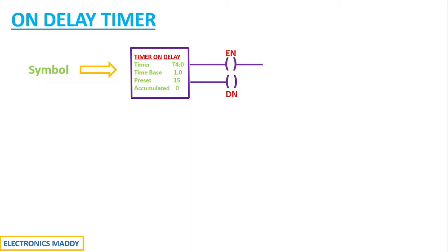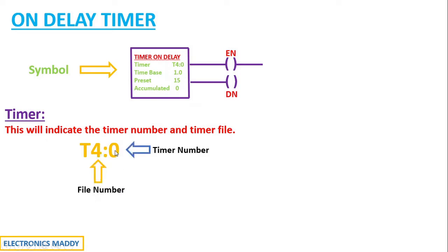Now let us go to case by case. Starting off from Timer. What is Timer? So, Timer over here will indicate the Timer number and Timer file. If you carefully observe, I have used T4:0 over here. So, T4 stands for the file number and colon 0 stands for the Timer number.